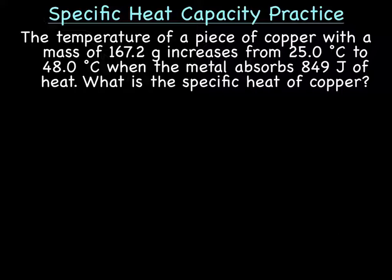The temperature of a piece of copper wire with a mass of 167.2 grams increases from 25 degrees Celsius to 48 degrees Celsius when the metal absorbs 849 joules of heat. What is the specific heat of copper?